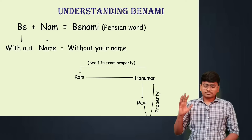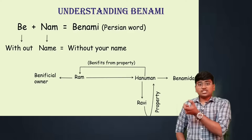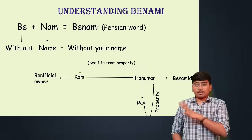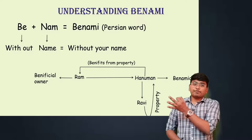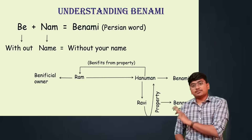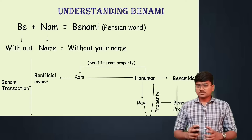In this transaction, Hanuman will be called the benamidar of Ram, and Ram will be the beneficial owner of the property because the benefits from the property go to Ram. Ram has also paid the consideration. Hanuman's only role is to get the property registered in his name — that is why he is called the benamidar. The property involved is called benami property, and the entire transaction is called a benami transaction.